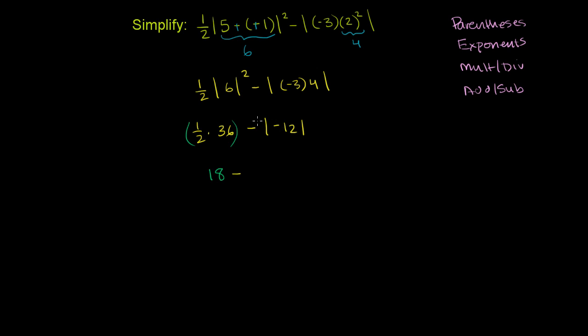What's the absolute value of negative 12? It's 12. So it's going to be 18 minus 12, which is equal to 6. And we are done.